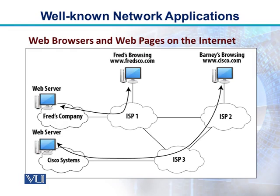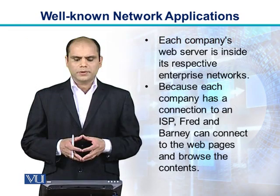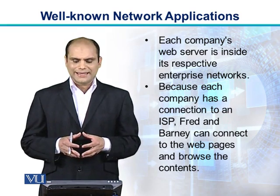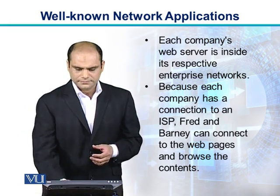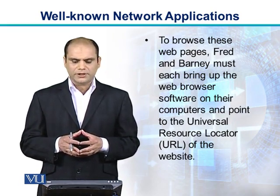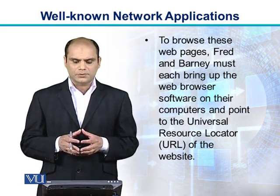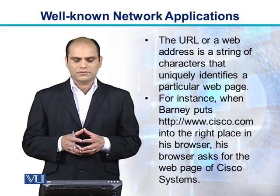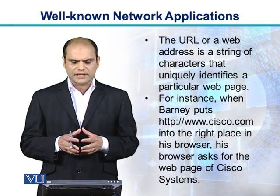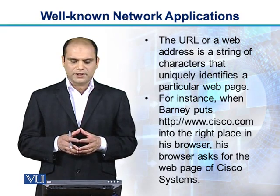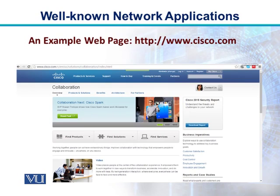Fred is connected to ISP1 while Barney is connected to ISP2. Each company's web server is inside its respective enterprise network. Because each company has a connection to the ISP, Fred and Barney can connect to the web pages and browse the contents. To browse these web pages, Fred and Barney must each bring up the web browser software on their individual computers and point to the URL — the Universal Resource Locator — of the website. The URL, or web address, is a string of characters that uniquely identifies a particular web page. When Barney puts www.cisco.com into his browser, his browser asks for the web page of Cisco Systems.